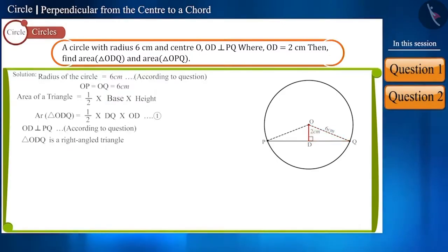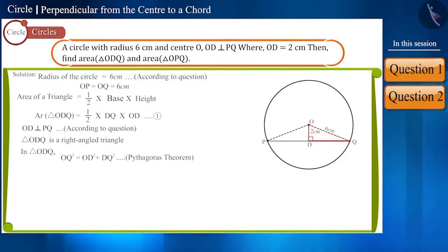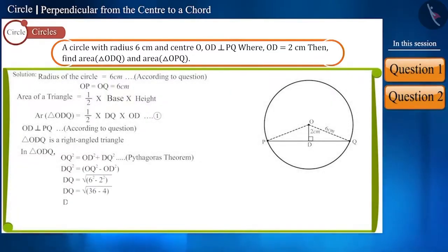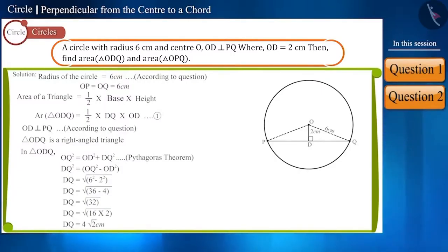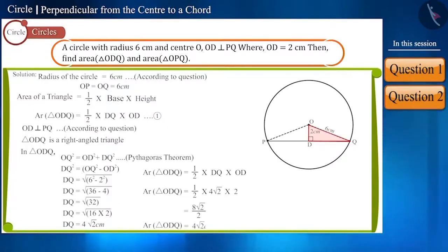OD is the height of triangle ODQ, which is given to be 2 cm. We know the height, but we have to find the value of the base DQ. We can use the Pythagoras theorem in this triangle to find the length of DQ. Here, we get the length of DQ as 4√2 cm. By placing the values of DQ and OD in the area formula, we get the area of triangle ODQ as 4√2 cm².